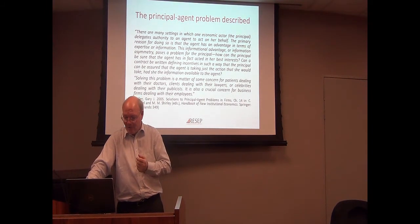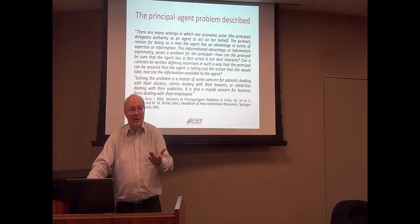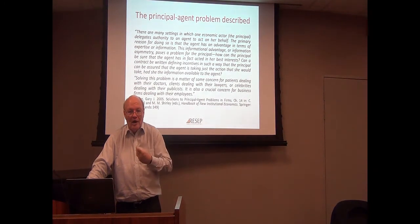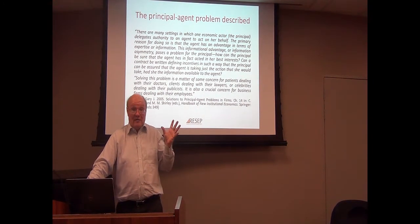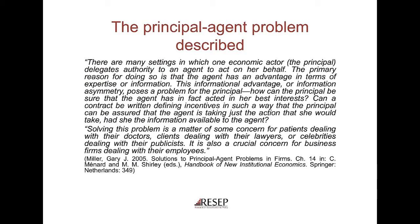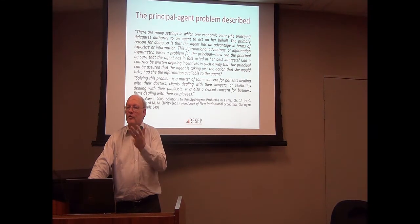So how do you deal with it? You try to have a contract, or you try to establish a relationship of trust in the long run — which is in a sense a type of contract or compact. Can a contract be written defining incentives in such a way that the principal can be sure that the agent is taking just the action you would take had you the information available to the agent?